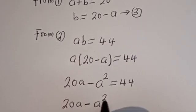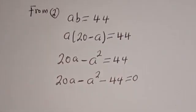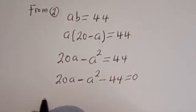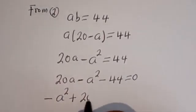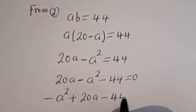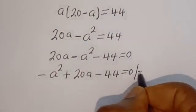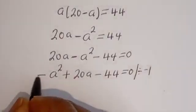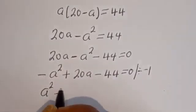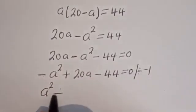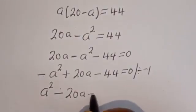Rearranging: 20a minus a squared minus 44 equals zero. In standard form: minus a squared plus 20a minus 44 equals zero. Dividing all through by minus one gives a squared minus 20a plus 44 equals zero.